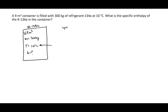The specific volume V is equal to the volume over the mass, so this is equal to 9 meters cubed over 300 kilograms, which is equal to 0.03 meters cubed per kilogram. So our specific volume is 0.03 meters cubed per kilogram.